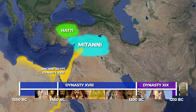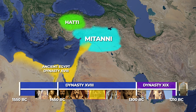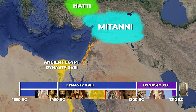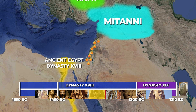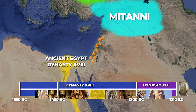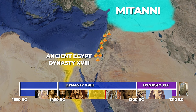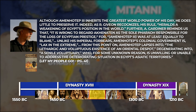As rebellions typical of the Levant begin to spring up, Amenhotep III does nothing to suppress them, effectively withdrawing Egyptian hegemony in the region. This policy would persist and degrade to its fullest expression in the subsequent reign of his son, Akhenaten. To be fair, Amenhotep III's reign was remembered domestically as one of peace and prosperity. However, the lack of activity in the Levant has brought some Egyptologists to regard this peace and prosperity as less than the ancient Egyptians have cracked it up to be. Although Amenhotep III inherits the greatest world power of his day, he does little to preserve it. Indeed, as Argivion recognizes, his rule heralds a weakening of Egypt's position in the world.